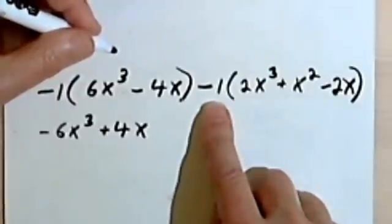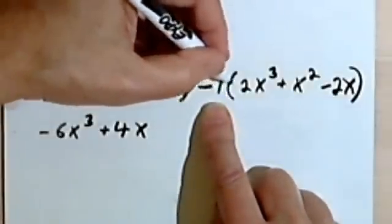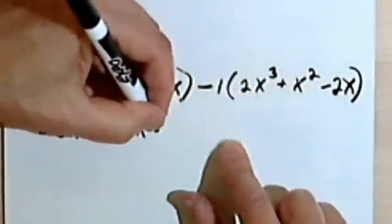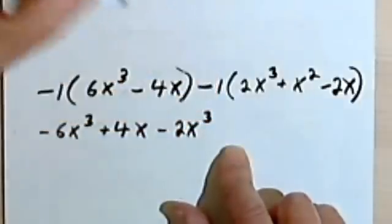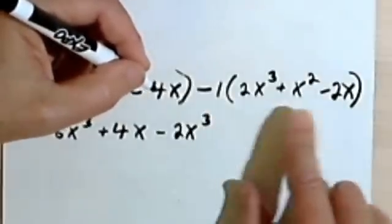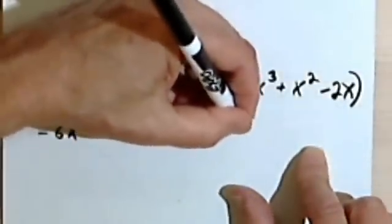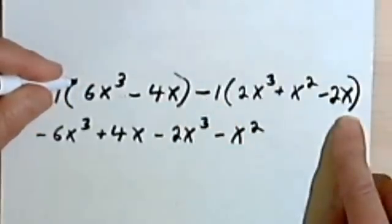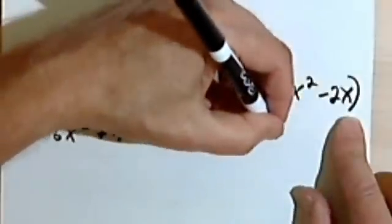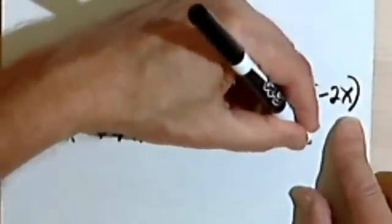Distributing this -1, I've got -1 times 2x³, so that's going to be -2x³. Negative 1 times x² is just -x². And -1 times -2x is going to give me a positive 2x.